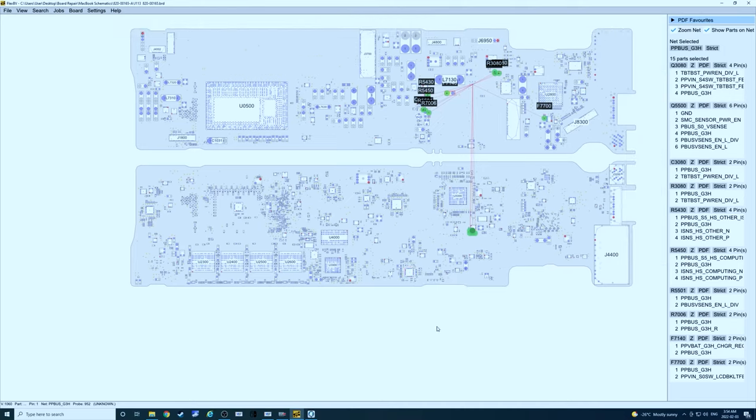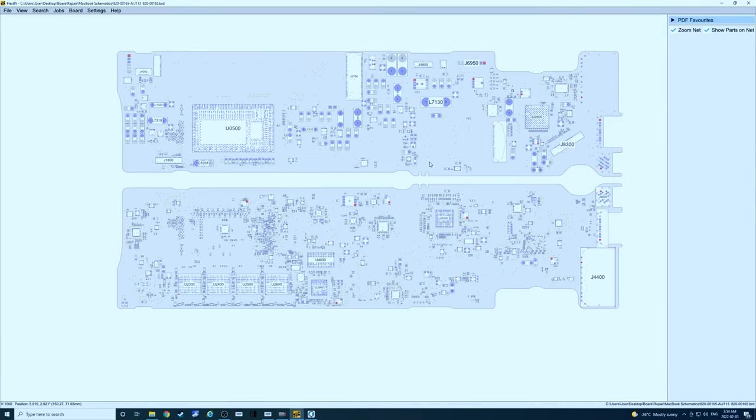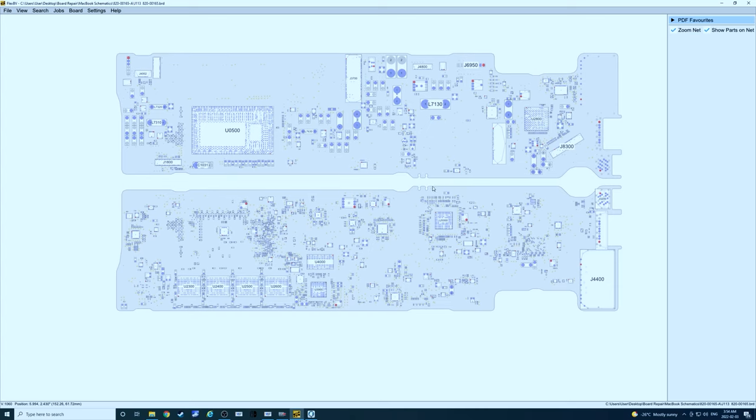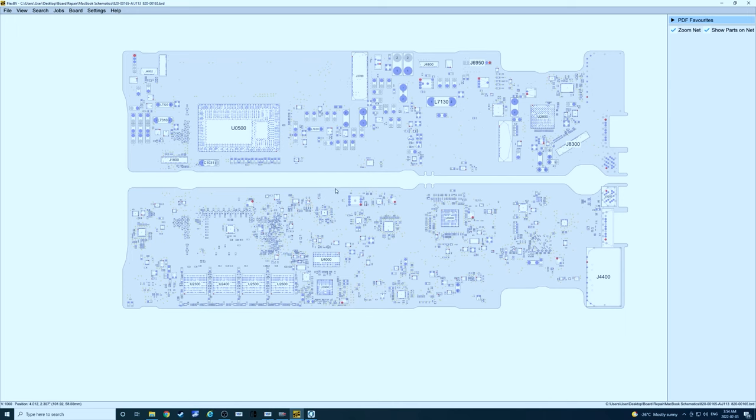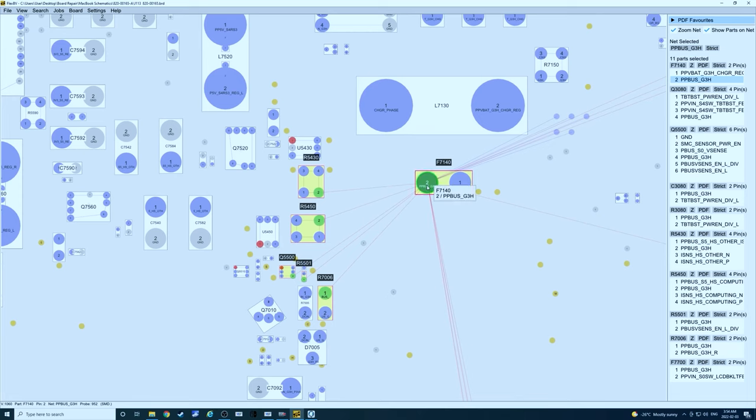So the machine came in not turning on. When we looked at the board everything looked absolutely perfect. The first thing we did was hook it up to our DC power supply and we saw that we were getting around 35 milliamps which is obviously not what we want to see. So the first thing we checked was the main power rail of the machine which is PP bus G3 hot. We noticed zero volts and a full short to ground.